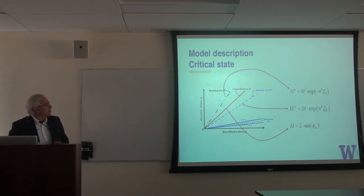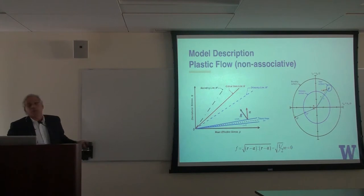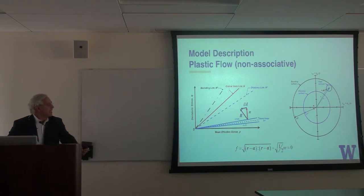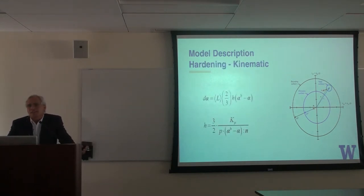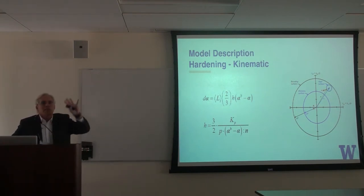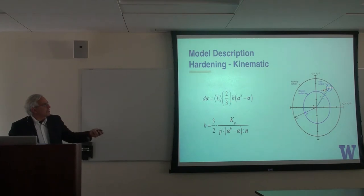This is the basic of bounding surface modeling. It includes a non-associative flow rule — meaning if this is the normal to a yield surface, the flow follows a different direction. There is a component associated with the volumetric change, and the volumetric change depends on a parameter D. That's the main thing of the model: how to account for this parameter D, which includes contraction and dilation. For that, you use what is called kinematic hardening. The kinematic hardening will depend on some other parameters, and in particular, it looks at the distance between what we call the back stress in one position to image points in the bounding surface.